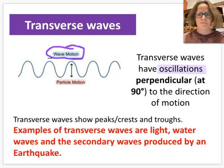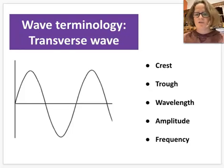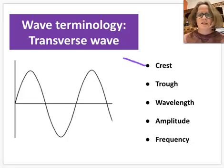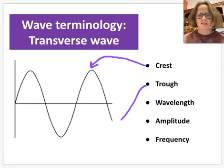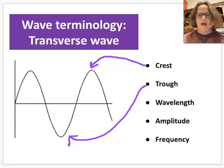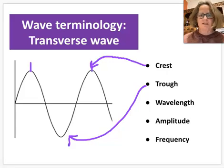Let's look at a transverse wave and label some features. The crest is the top of a wave — the highest point of movement of the particles. The trough is the opposite — the lowest point of the wave. The wavelength is the distance for one complete wave cycle; the easiest way to measure it is from one crest to the next crest.